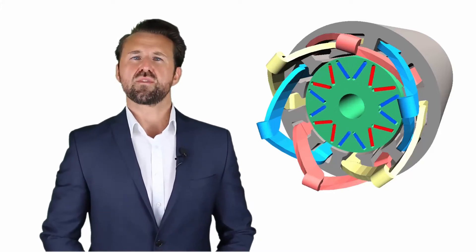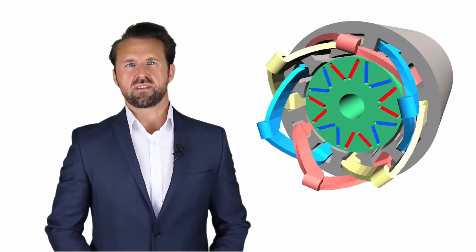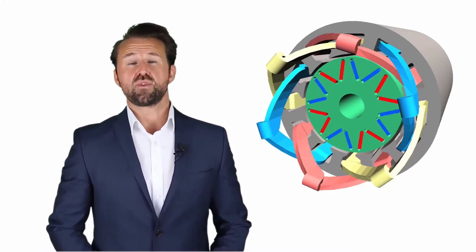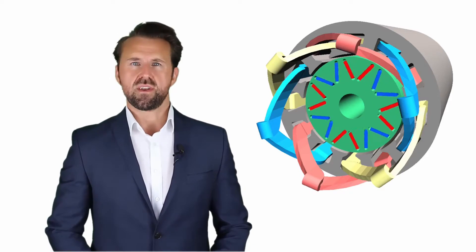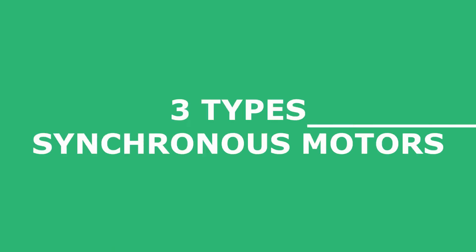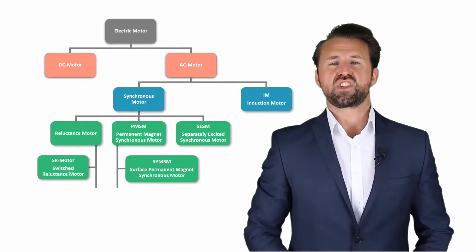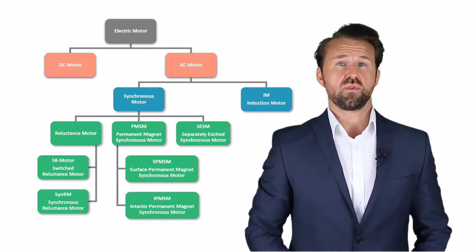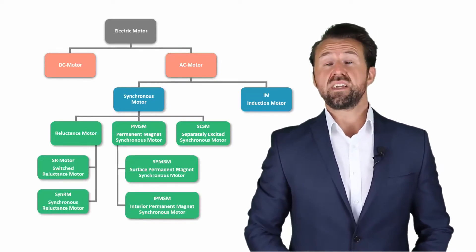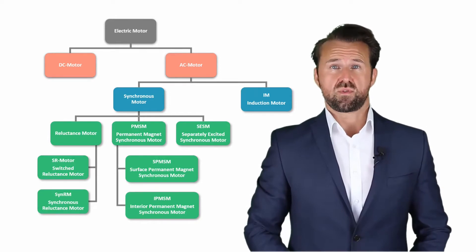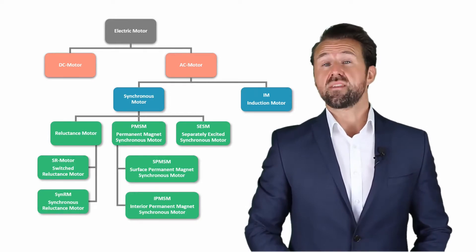There are only three types of Synchronous Motors. Synchronous Motors belong to the group of AC motors, which can be divided into Asynchronous Motors and three different types of Synchronous Motors, as shown in the diagram.